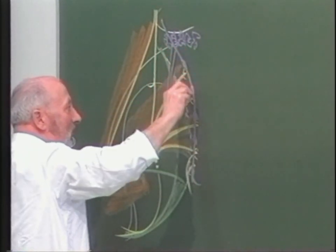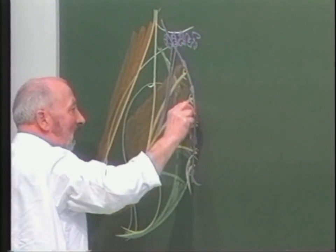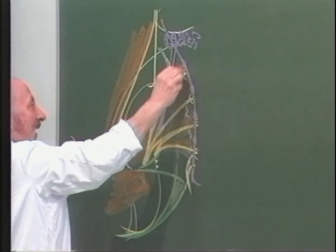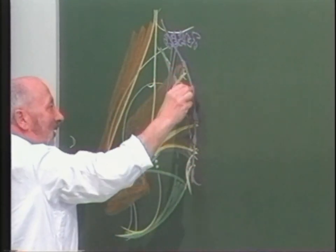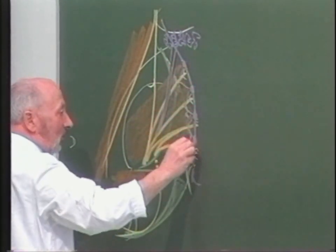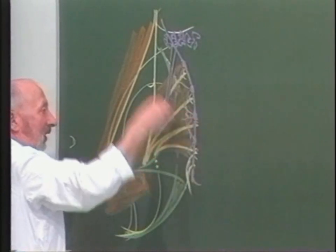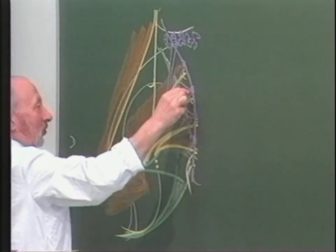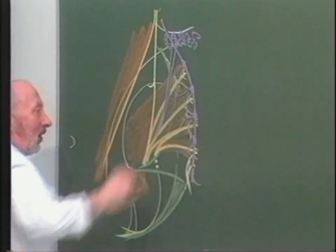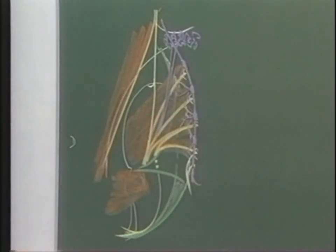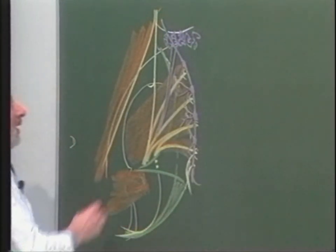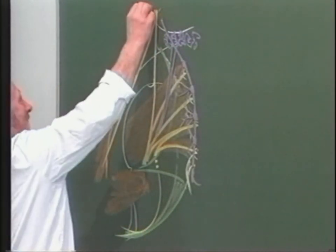De cette chaîne ganglionnaire, qui va par ailleurs être rattachée aux racines rachidiennes par les rami communicantes, vont se détacher des filets splanchniques destinés, entre autres, à la loge postérieure du rectum.